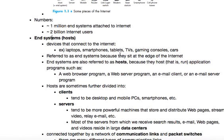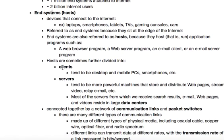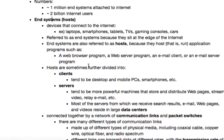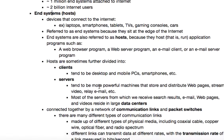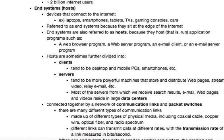They're called that because they sit at the edge of the internet. They can host applications sometimes, like a web browser or web server. It's an important distinction to make because the internet and the web are actually different. These hosts can be further divided into clients — like desktops, mobile PCs, smartphones — and servers, which are more powerful machines that store and distribute web pages, stream video, relay email, and so on.